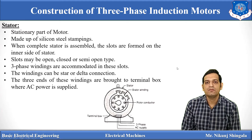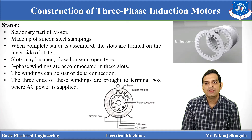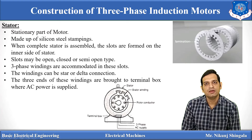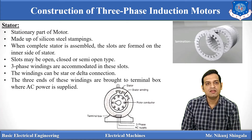The ends of the stator windings are brought out to the terminal box where AC power is supplied. Here you can see the complete 3D view of the stator construction, which consists of steel stampings — all joined together to form a single piece of the stator, with slots on the inner periphery. These stampings are made up of low-reluctance material like silicon steel, cast iron, or cast steel to minimize losses in the motor.